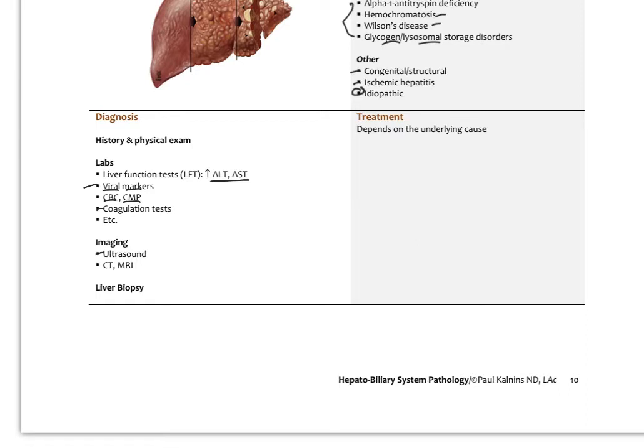Looking at your complete metabolic panel for signs of renal injury, electrolytes, blood sugar, coagulation tests, and so forth. Depending on the case we might order more. Imaging with ultrasound, CT, MRI. Sometimes we need a liver biopsy. The treatment really depends on the underlying cause.